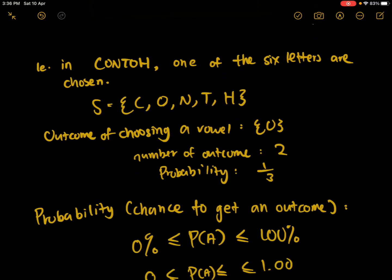For example, one of the 6 letters are chosen: C, O, N, T, and H. In the textbook they wrote O1 and O2. But when we're writing about the possible outcomes, we only have one outcome which is O. When writing the possible outcomes of getting a vowel, we only have one letter to get, which is O. However, since there are 2 O's, we have a 2 out of 6 chance of getting a vowel, because there are 2 O's and 6 letters — so it's 2 over 6, which is 1 over 3. But the total number of distinct letters is still 5; we just have a higher chance of getting O than the others.